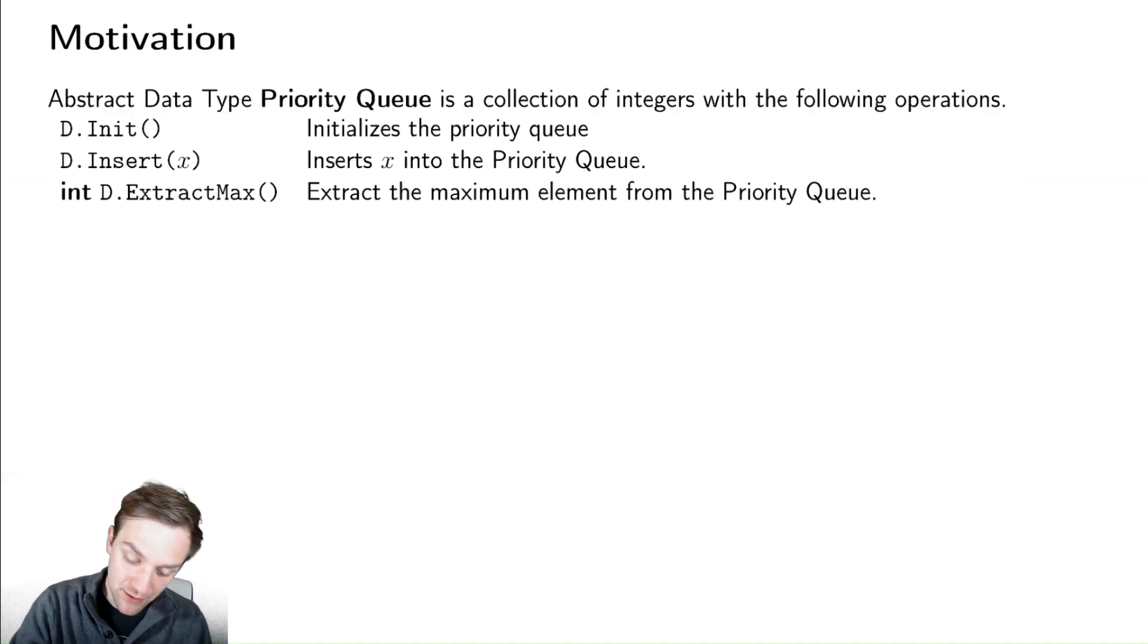We have three main functions we want to be able to do. We want to be able to initialize the data structure, insert things into the data structure, and extract the maximum element from the data structure. Typically we're going to be assuming that the things being stored are integers, but it doesn't really matter. A heap is an implementation of a priority queue.